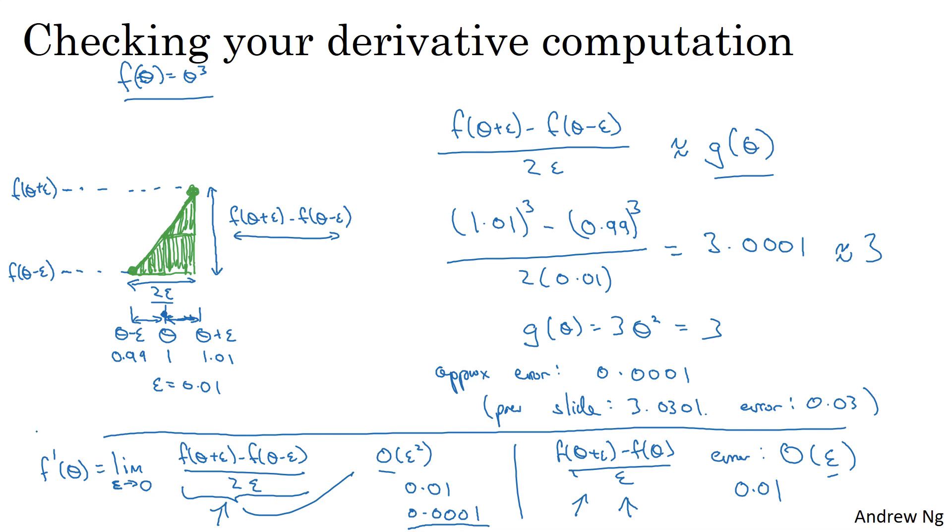If you didn't understand my last few comments, all of these things down here, don't worry about it. That's really more for those of you that are a bit more familiar with calculus and with numerical approximations. But the takeaway is that this two-sided difference formula is much more accurate, and so that's what we're going to use when we do gradient checking in the next video.